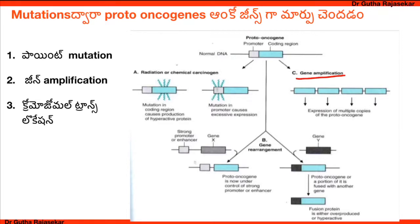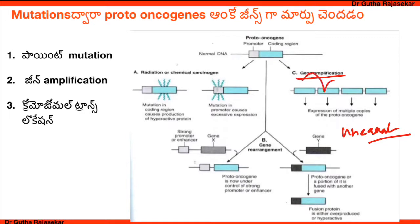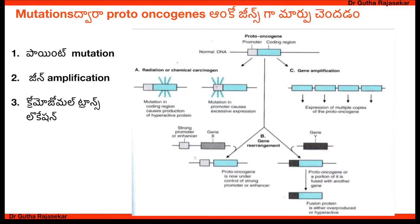Gene duplication, such as through unequal crossing over, can lead to gene amplification. This results in multiple copies of a proto-oncogene. After chromosomal translocation, a proto-oncogene can be placed next to a new promoter region.